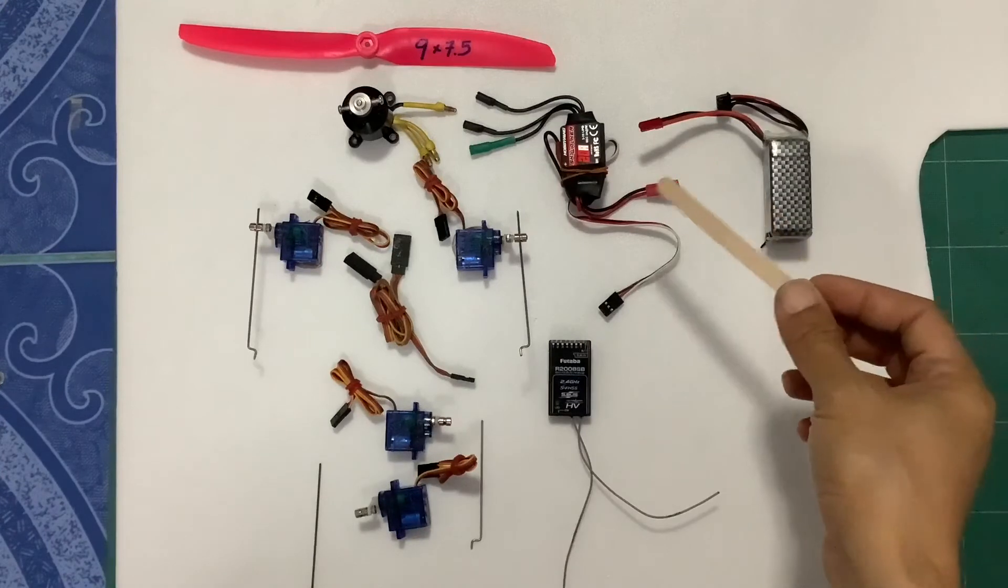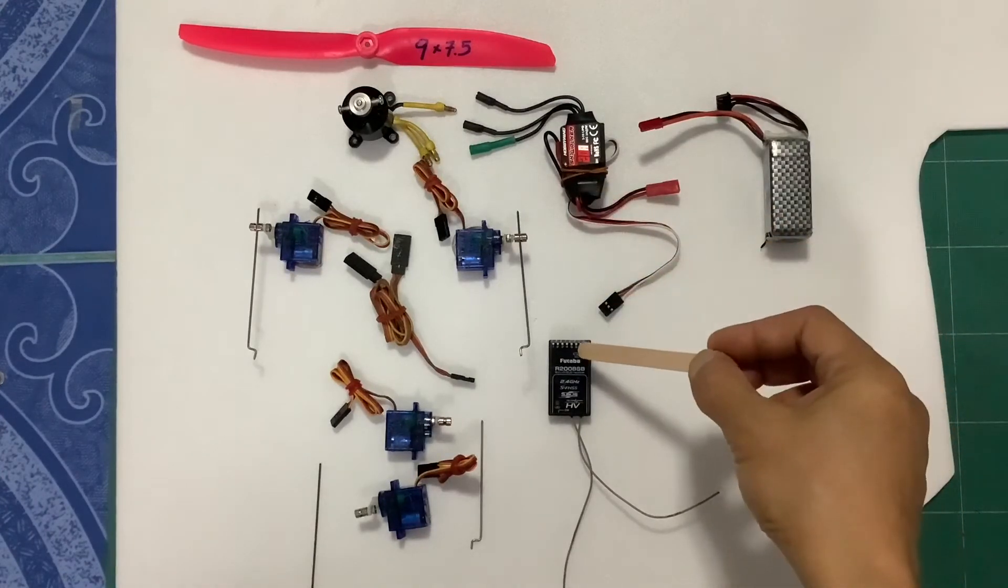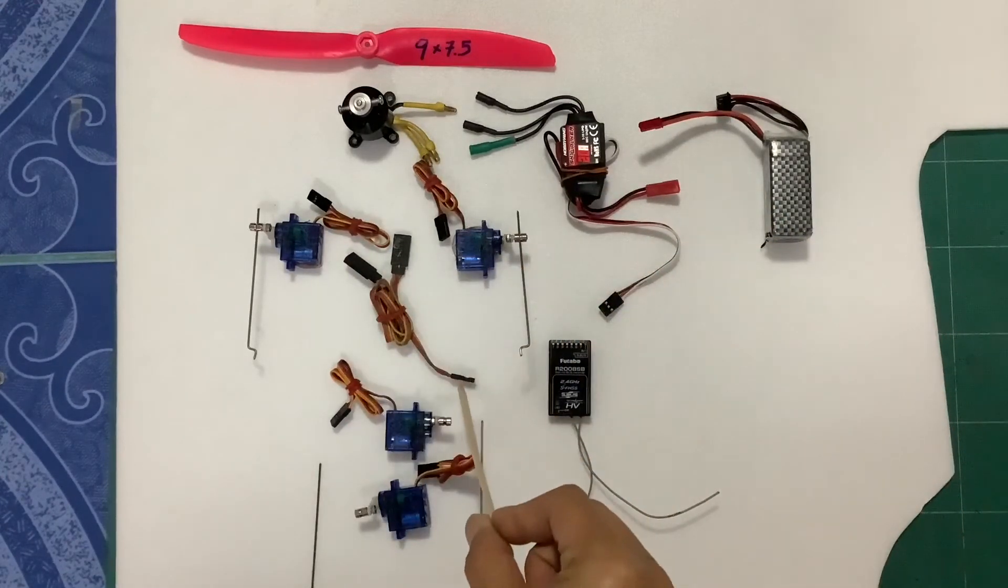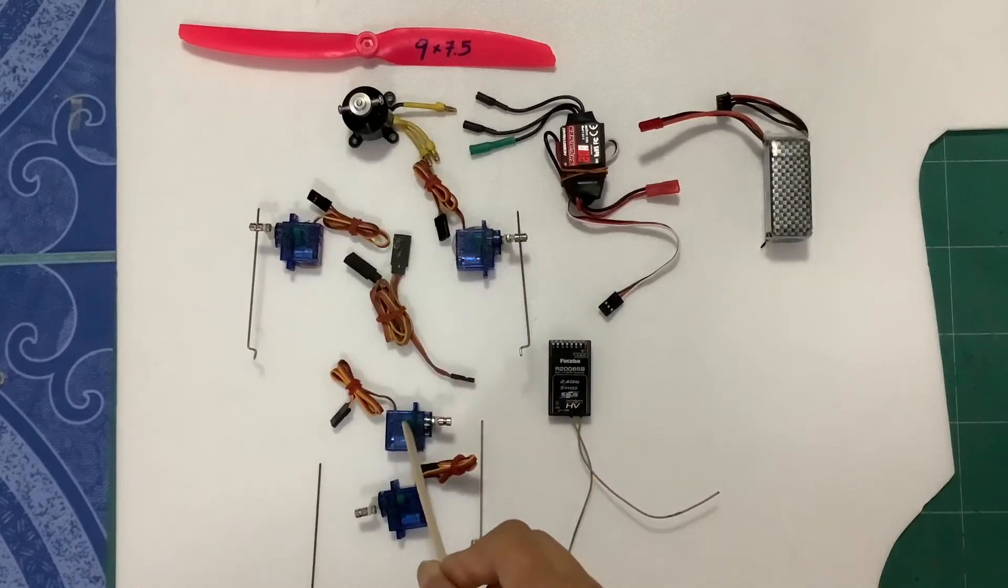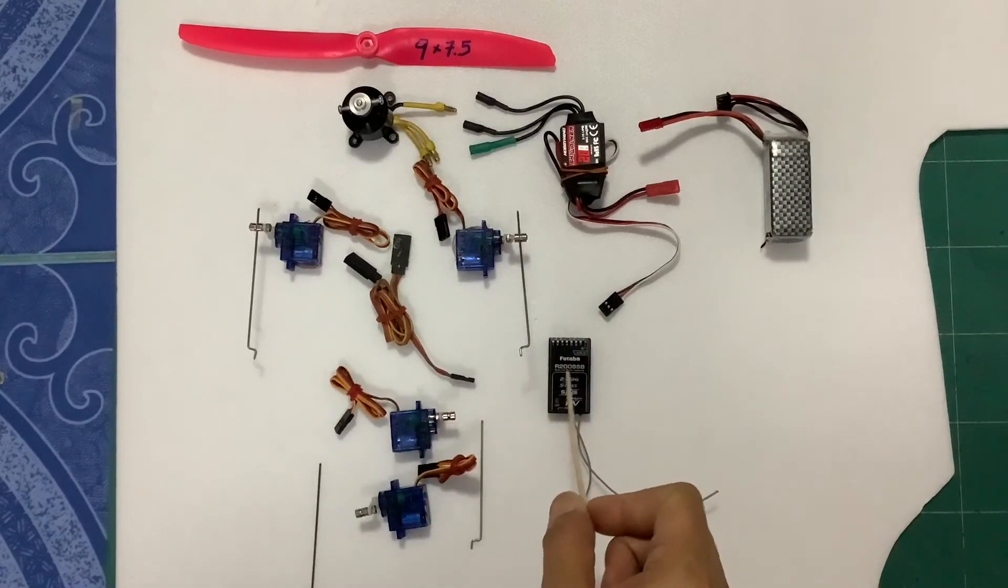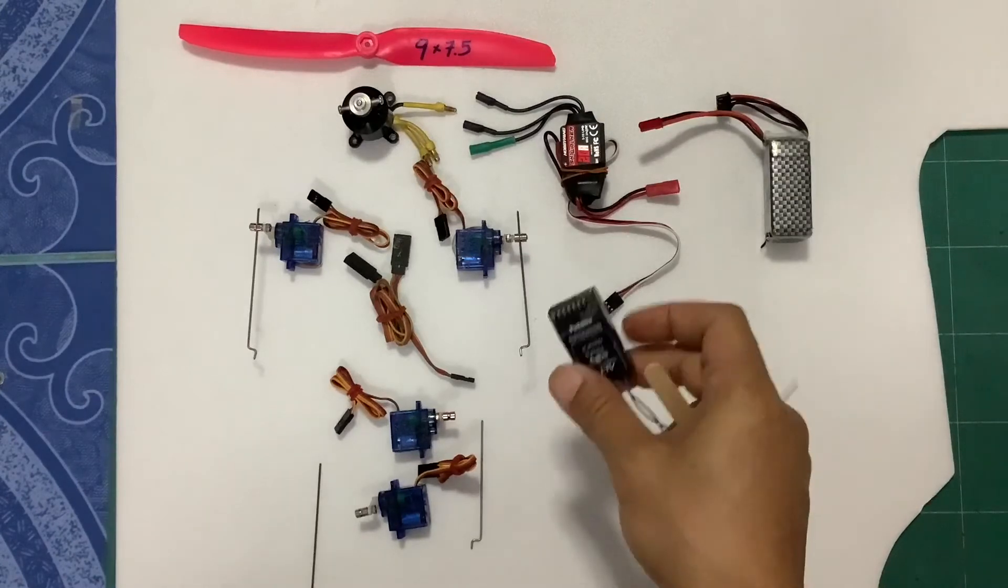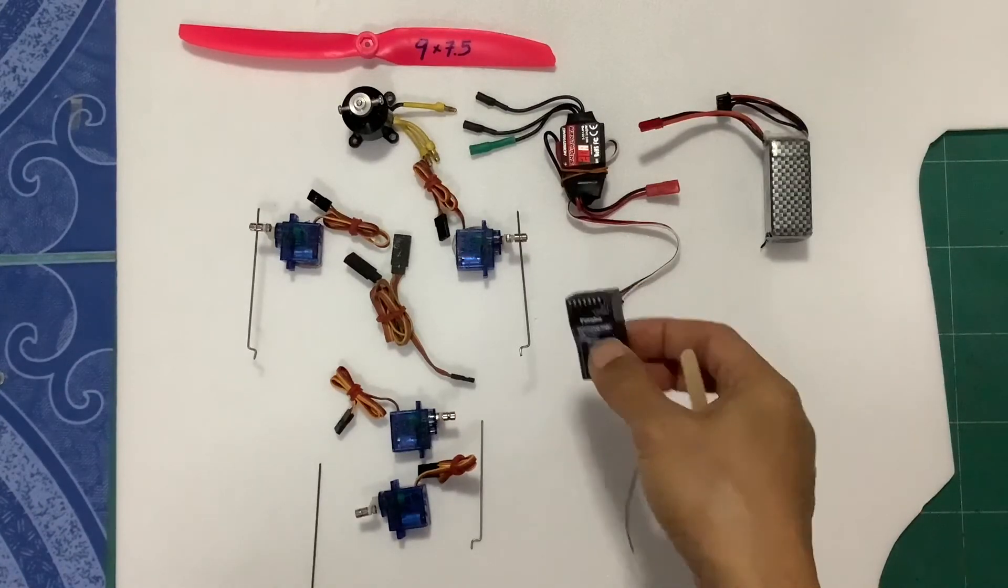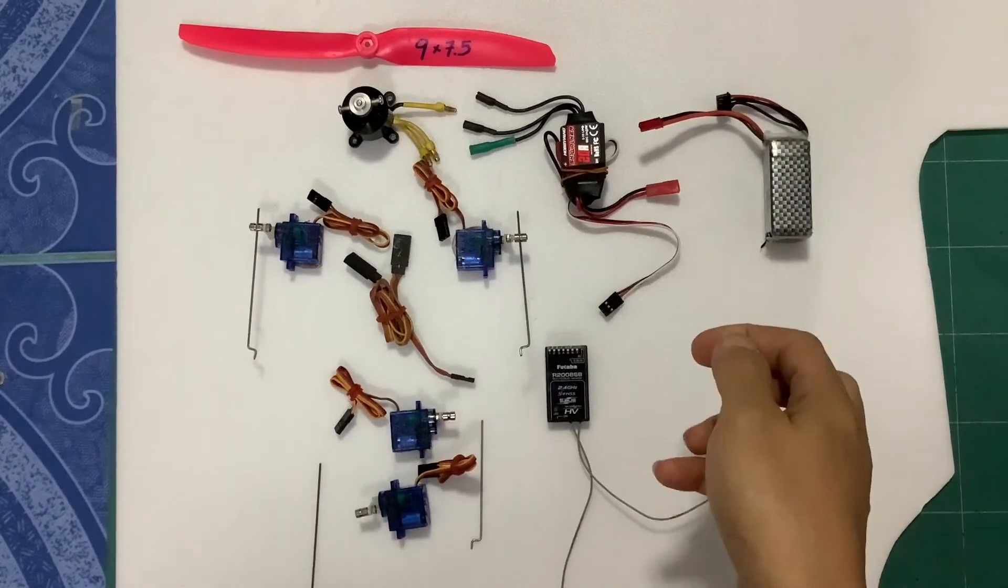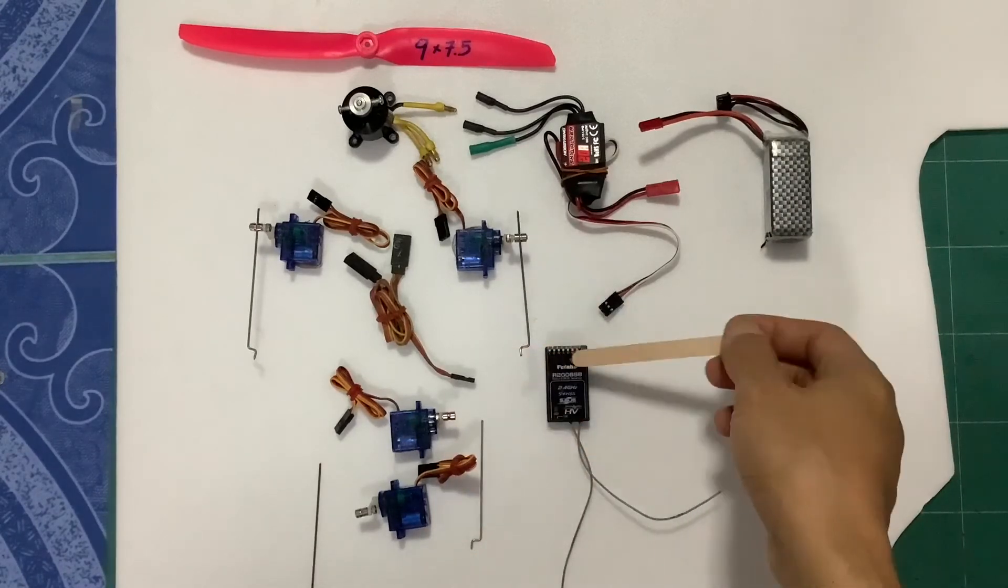We will connect ESC to receiver. Servo from this one connect to receiver. Elevator and rudder connect to receiver. So it depends on your receiver. Which one connect to which channel.